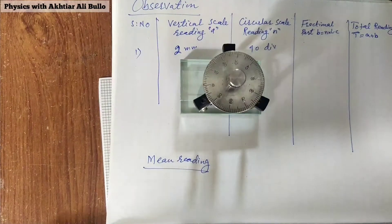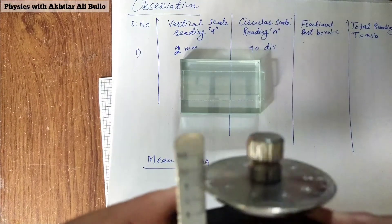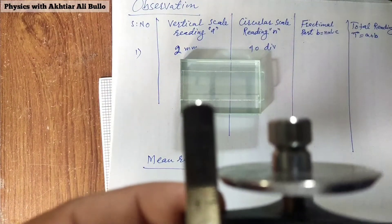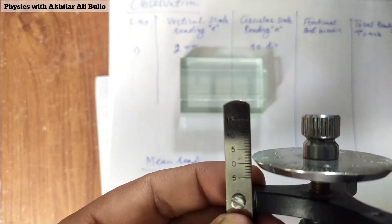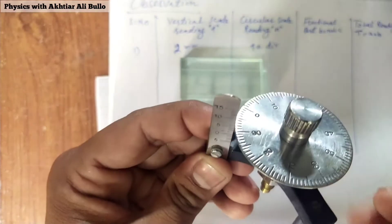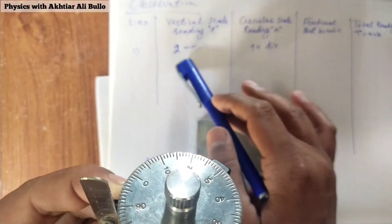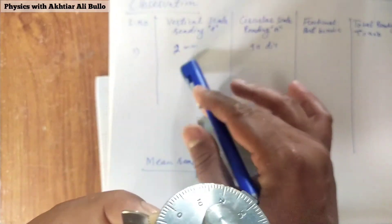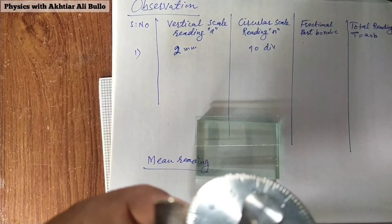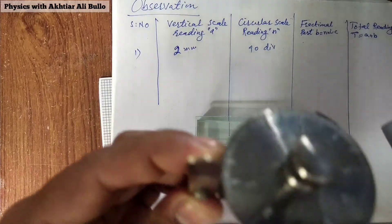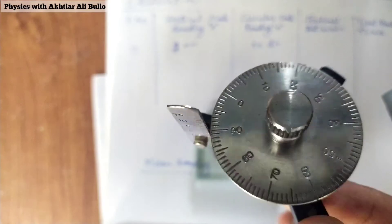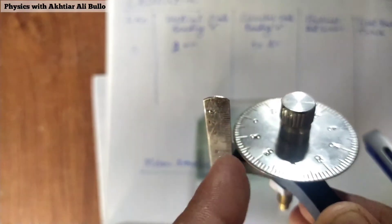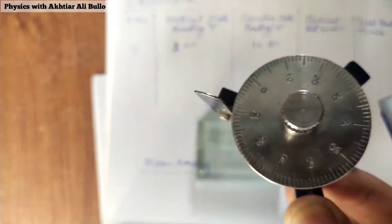The reading of the vertical scale is obtained as two millimeters. The reading of the circular scale is obtained as 90 divisions. So the reading of the circular scale is 90 divisions.